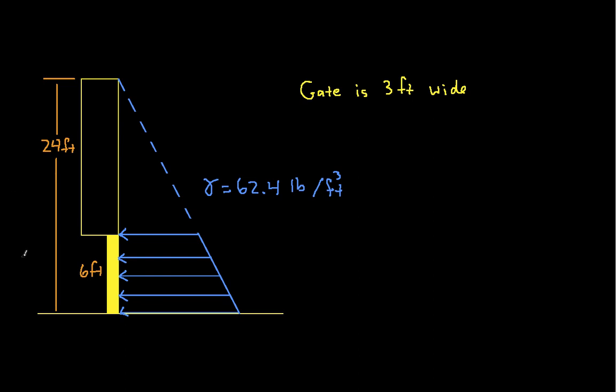Here we have a diagram of our situation. We have water that's 24 feet deep. We have a dam or wall or some other sort of structure here. And down at the bottom we have a gate that's 6 feet tall and 3 feet wide. The idea is that this might be hinged to flip upwards or it might slide up or down. In some way it might open.